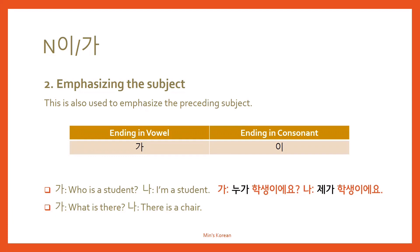Remember and be careful: if you use the 가 subject particle with 저, you need to say 제가, not 저가. So: 제가 학생이에요. And another example: 'What is there? There is a chair.' 무엇이 있어요? — not a desk or a pen, just a chair. You emphasize the chair, so: 의자가 있어요.